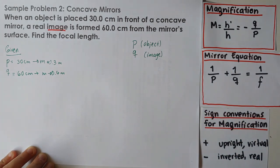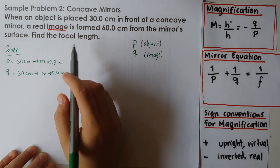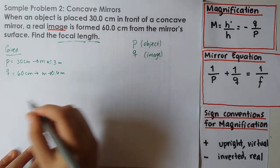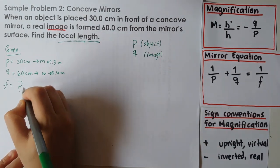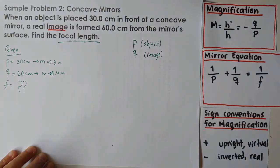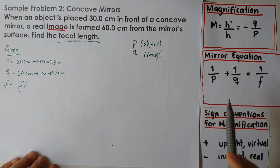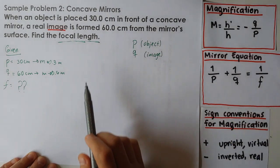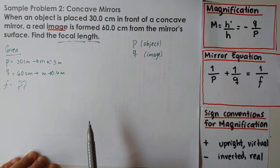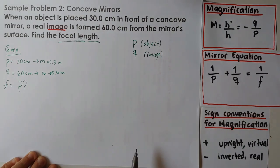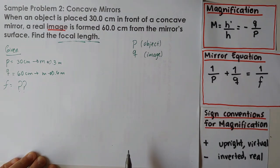Now what are they asking us to find? It says find the focal length, so F is unknown. Note that this F is not for frequency — it's for focal length. From the mirror equation shown here, we have that 1 over the object distance plus 1 over the image distance is equal to 1 over the focal length.